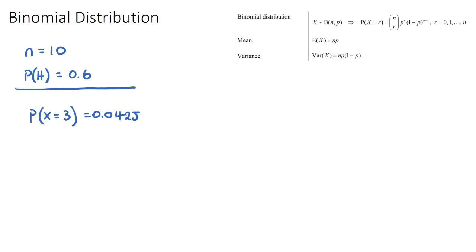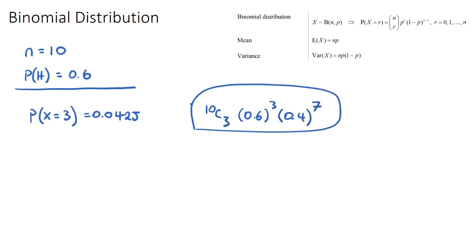If you're interested in how the formula works: we can get three heads out of ten in 10C3 ways — that's the combinations component. Then the probability of a head is 0.6, so we raise it to the power of three. For the seven tails it's 0.4 to the power of seven. The full formula is: P(X = r) = nCr × p^r × (1-p)^(n-r).